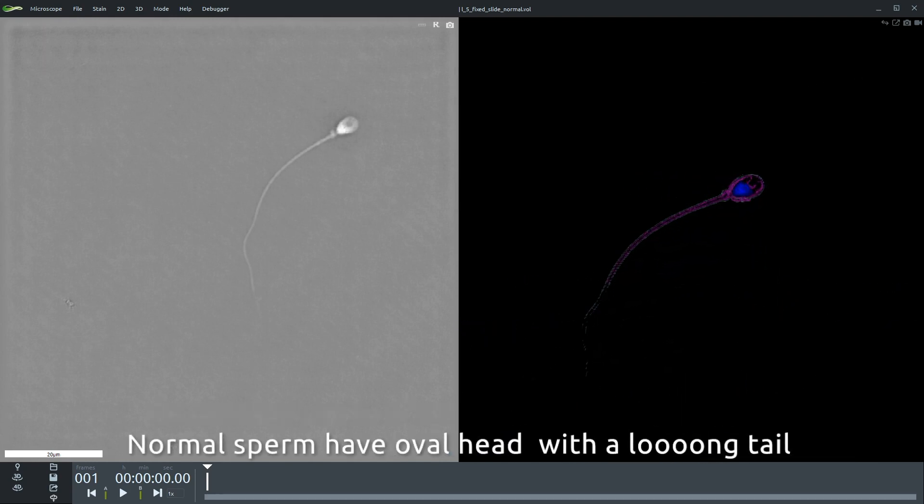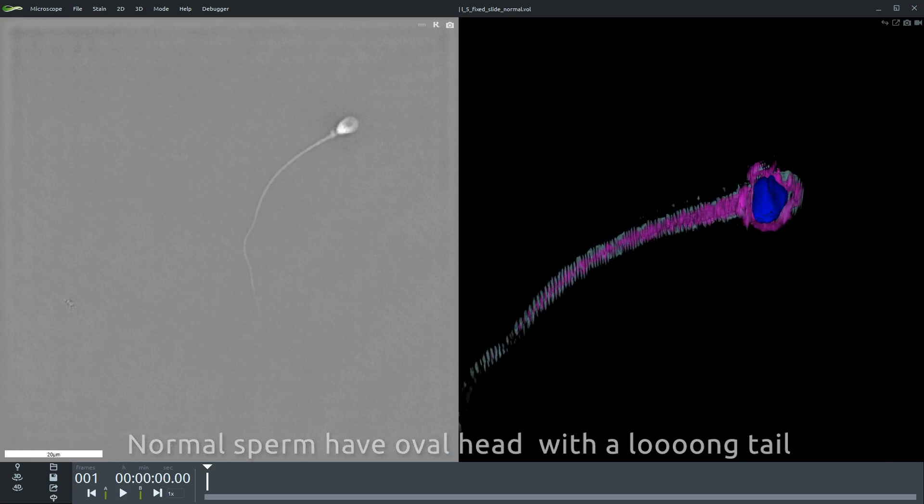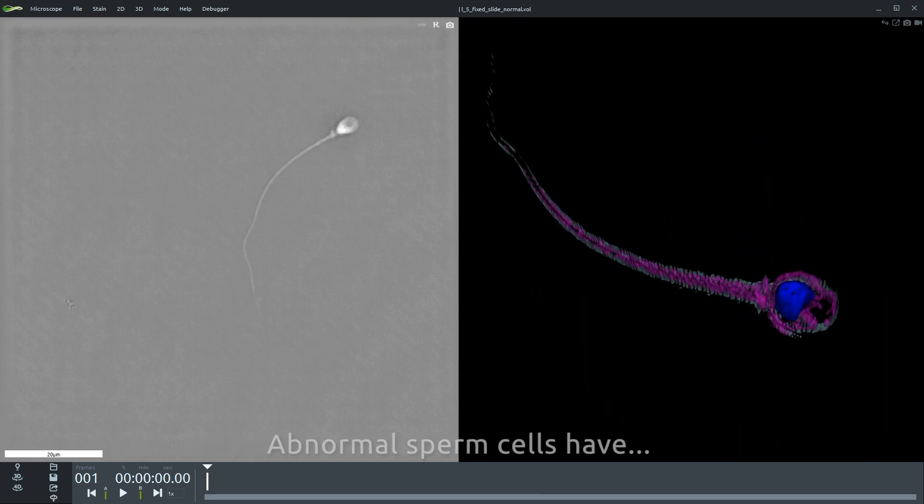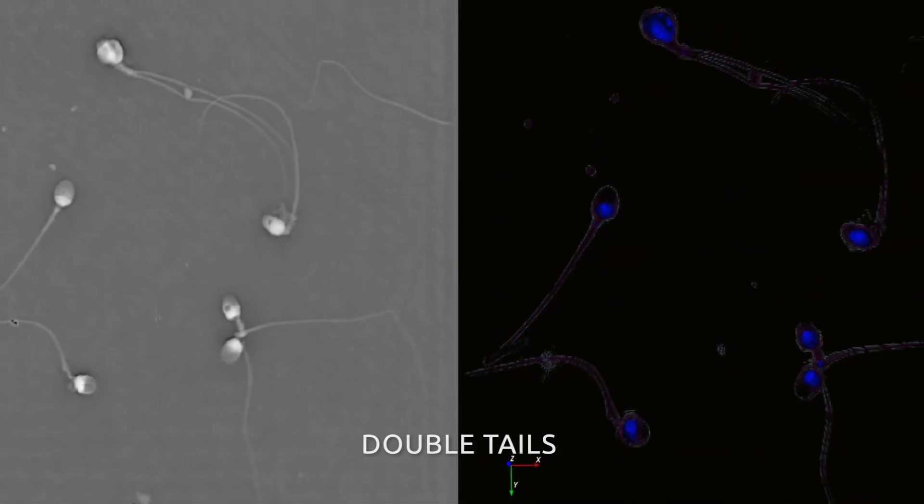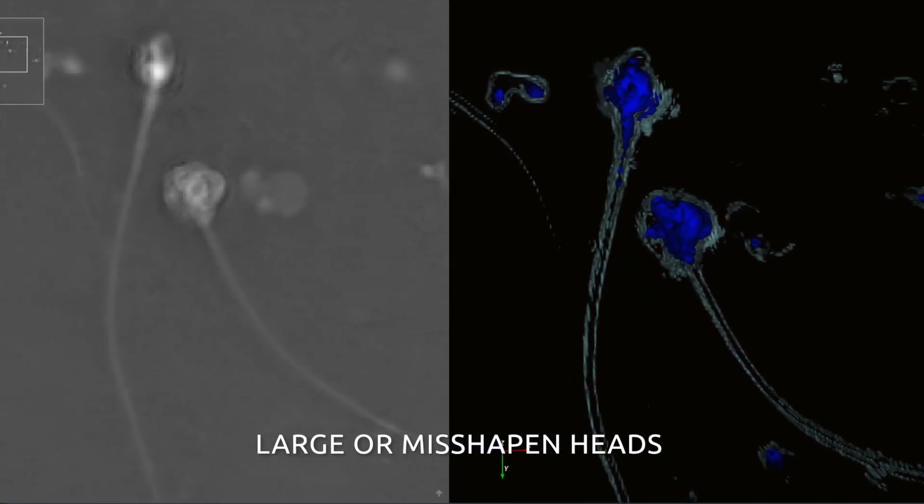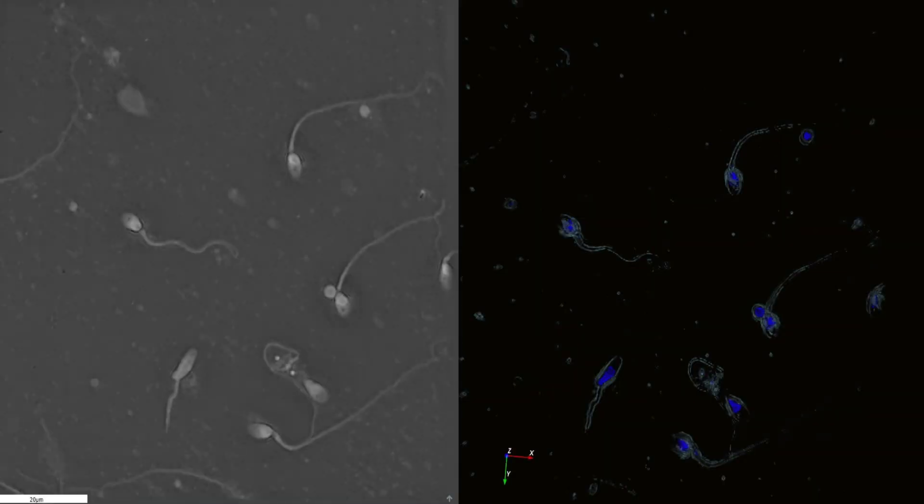Normal sperm cells have an oval head with a long tail. Abnormal sperm cells have double heads, double tails, large or misshapen heads, and a variety of other horrible defects.